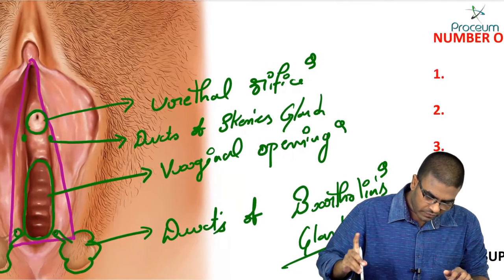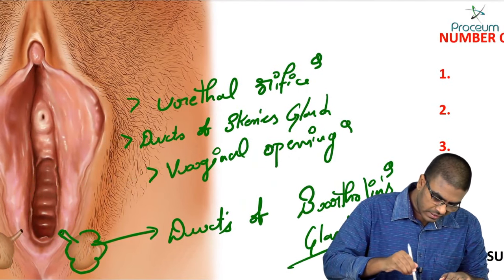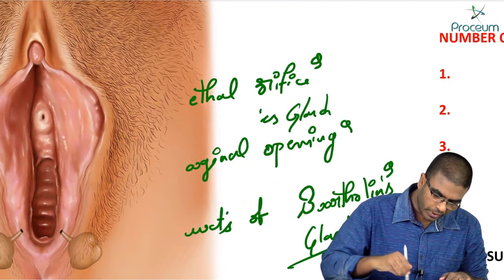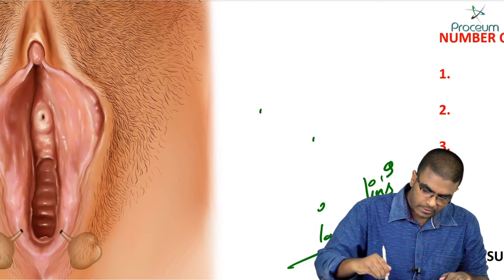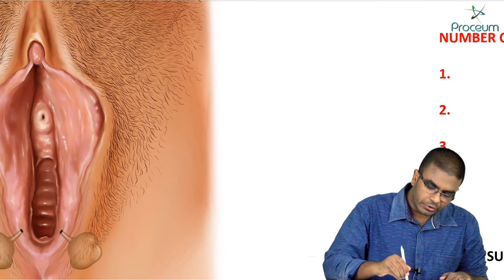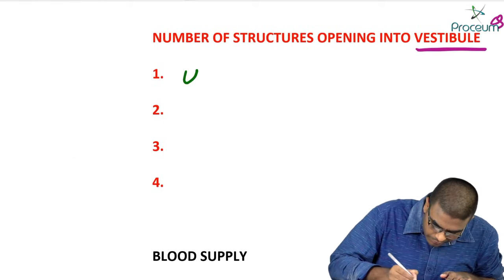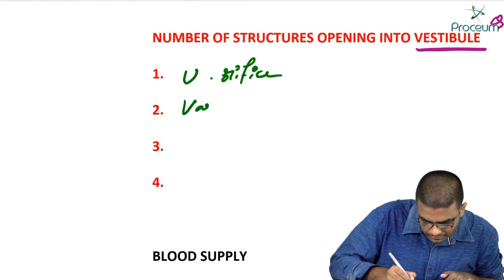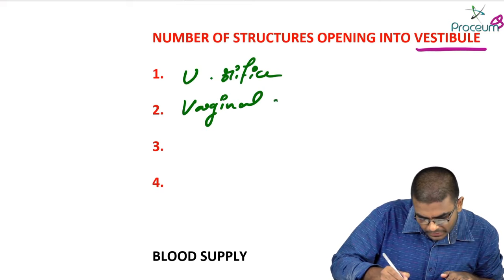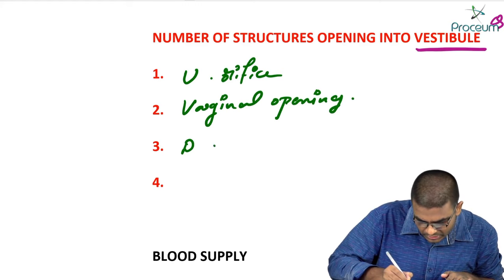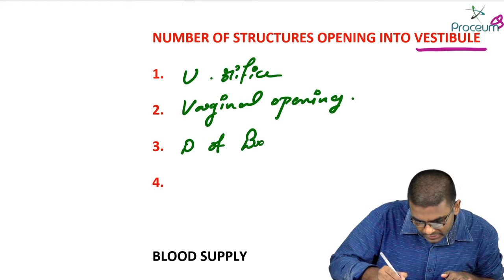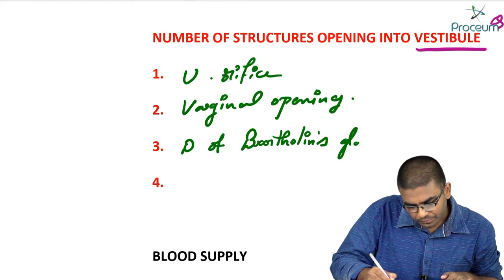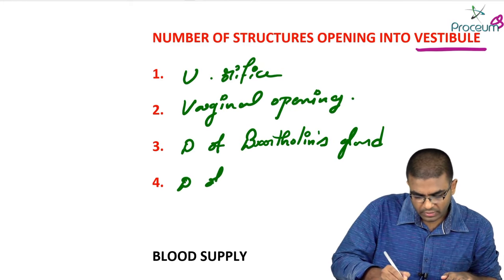To summarize, all of the following structures open into the vestibule: the urethral orifice, vaginal opening, ducts of Bartholin's glands, and ducts of Skene's glands.